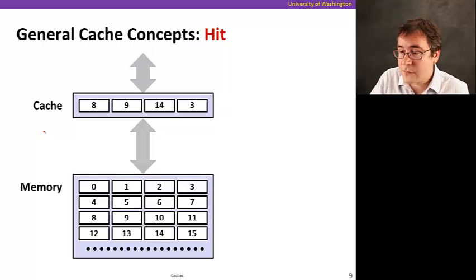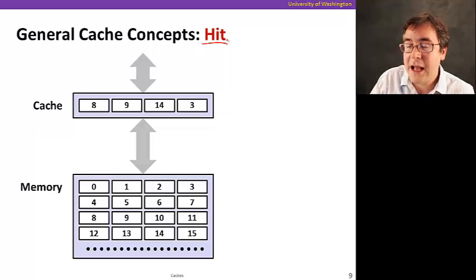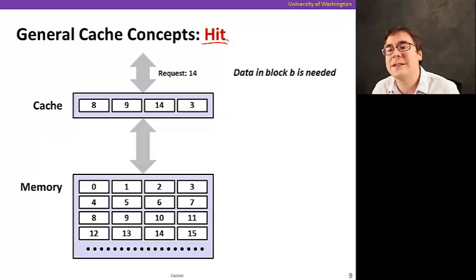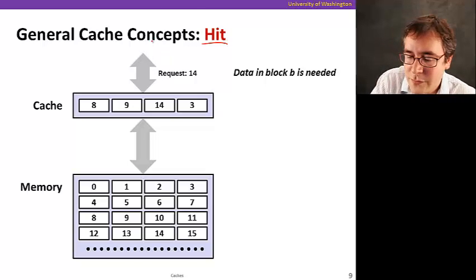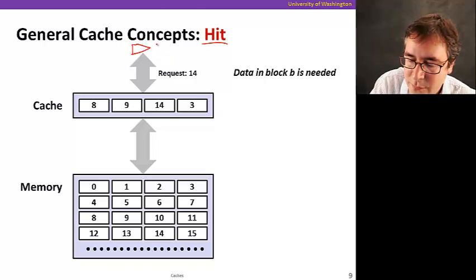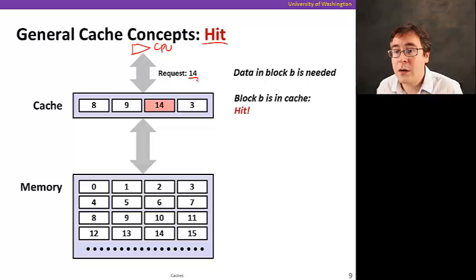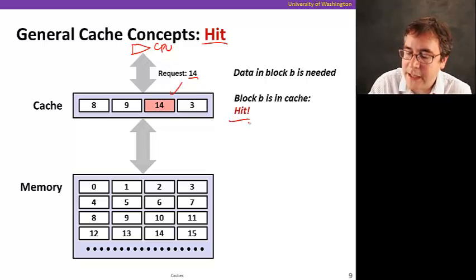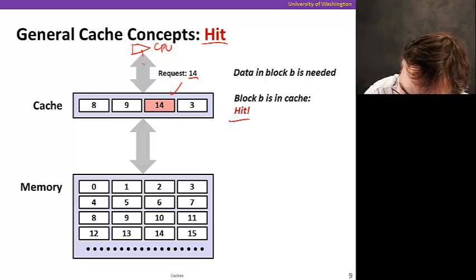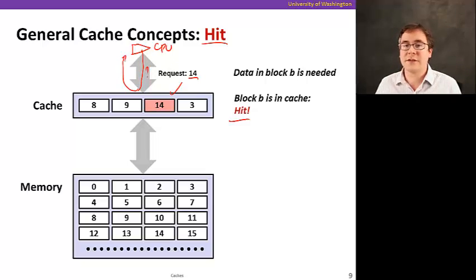So the first concept is what we call a hit. A hit means whenever you want to access the data. Let's say that the processor that's right here, that's where the CPU is, asks for 14. Well, if it happens to be in the cache, we call it a hit. So that means the CPU asks for the data, and then the cache can provide the data back. So that's fast. Because we took advantage of, that's a good thing. We took advantage of the fact that caches are fast and provide the data from the cache.